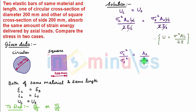Where A_S and A_C is cross-sectional area of square and circular section respectively. Writing the formula for area, we have sigma_C squared by sigma_S squared equals A_S is 200 into 200, that is side squared, and A_C is pi by 4 into D squared which is again 200 squared.